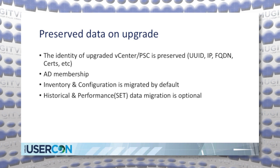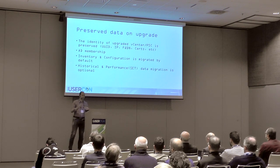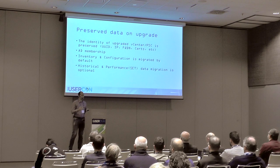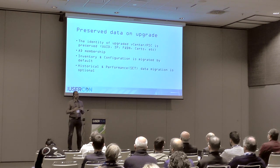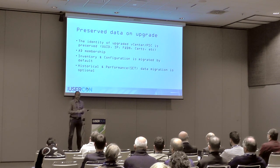During upgrade, the identity of the upgraded vCenter Server is preserved — all UUIDs, IPs, FQDNs, and certificates are preserved. After upgrade, if customers or applications are using that vCenter Server, none of them will know the vCenter Server was upgraded because the identity is the same and the API is backward compatible, so everything can still be accessed.